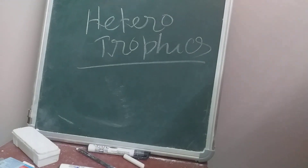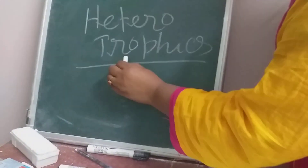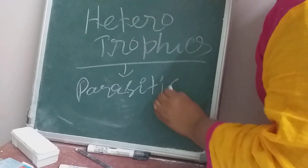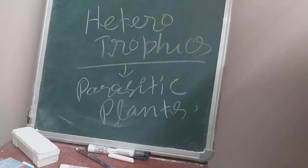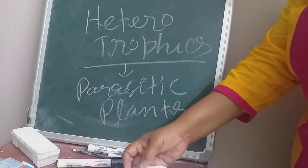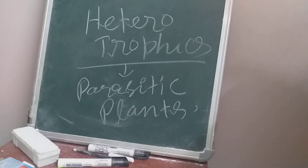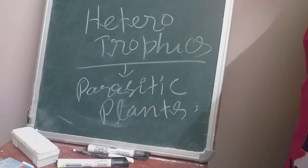Welcome back to my class. This is the third part of the lesson on heterotrophic, that is, parasitic plants. Parasite means an organism that depends on another organism for its food. The organism it depends on is called the host.